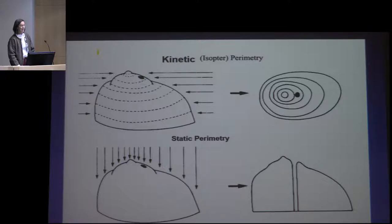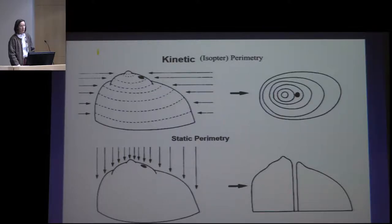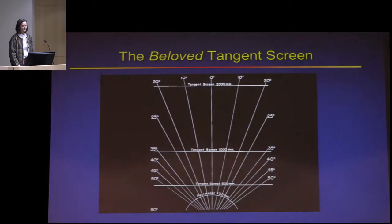In static perimetry, you're shining different brightnesses and sizes of objects in various locations, and the brightness is variably detected as you get closer towards the center. Kinetic means moving; static means not moving. In kinetic perimetry you get isopters; in static you get a graded mountain of vision.